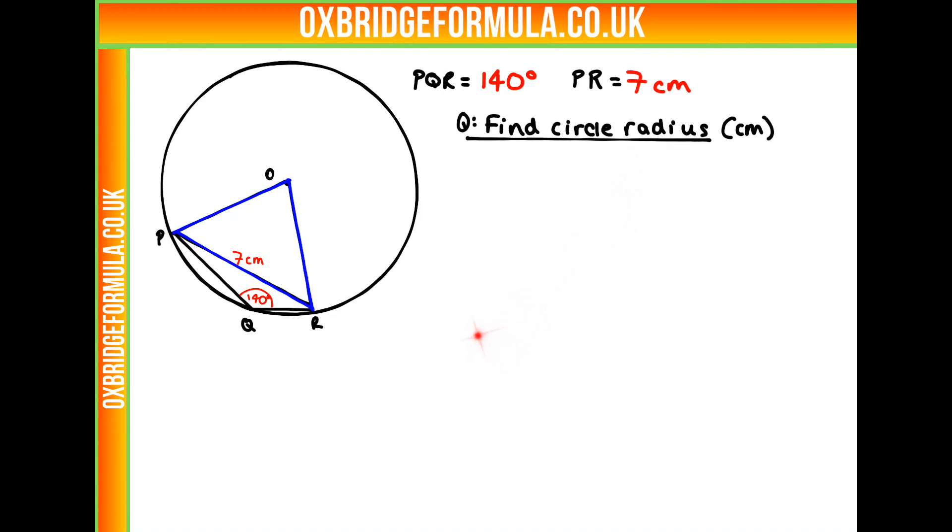So first of all, what is the radius? Where are we looking for on this circle diagram here? Well, they're going to be these two values here that stretch from the circumference of the circle to the middle. So I'm going to label those two R. Now, what else do we know about this circle? What tricks can we use to give us more information?